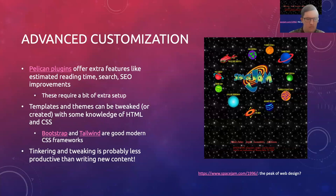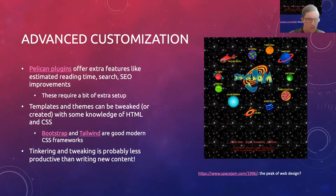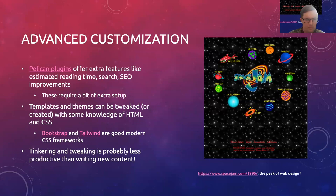If you want to get more into site design and tweak how your sites work, with Pelican there's a bunch of plugins available that can add extra features. You can set up search functionality for your site, or have those little things next to your articles showing an estimated reading time. Those do require a bit of extra setup, but they also integrate fairly smoothly with Pelican, so they can be quite quick to set up.